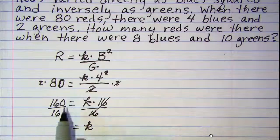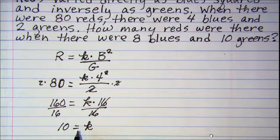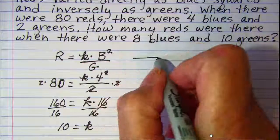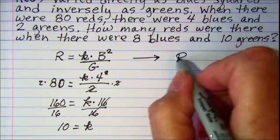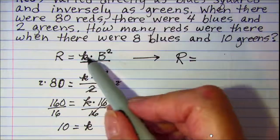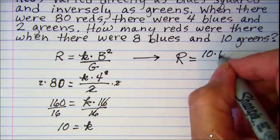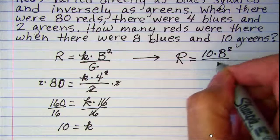Now once I have the value for K I can put that into my original equation. So this becomes R equals and then in place of K I'll put 10 times B squared divided by G.